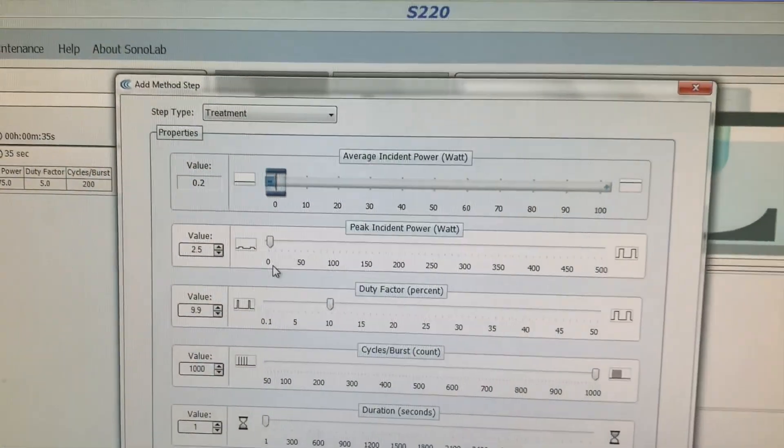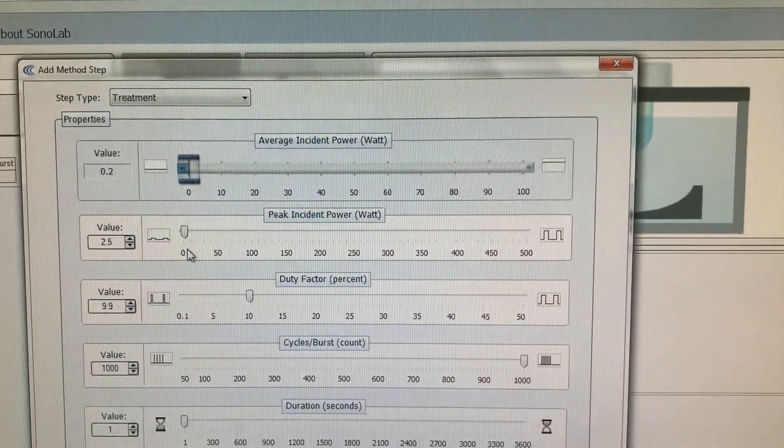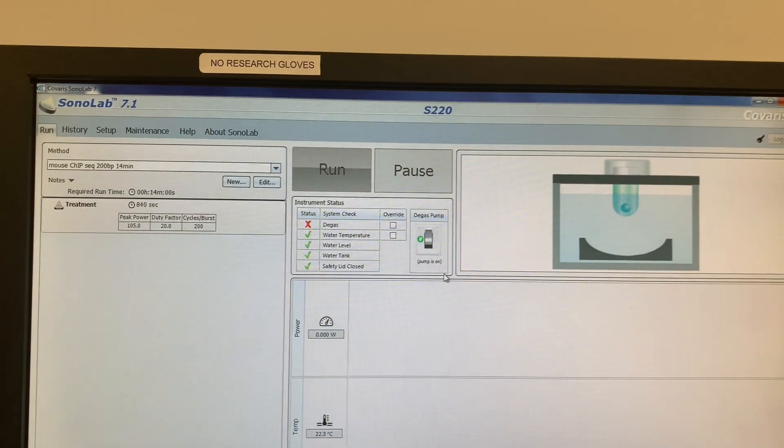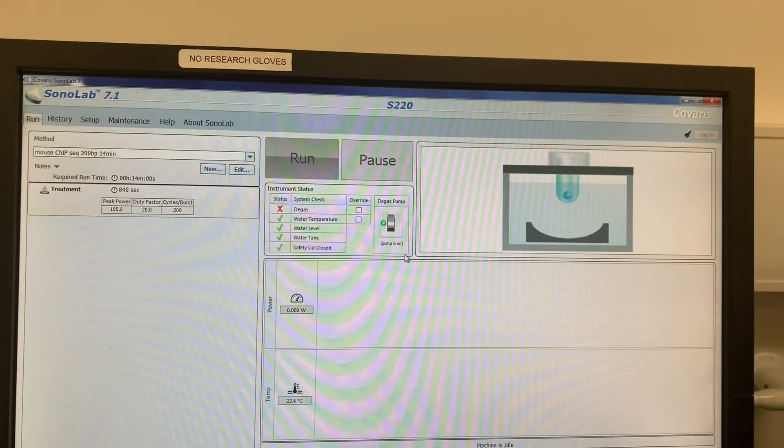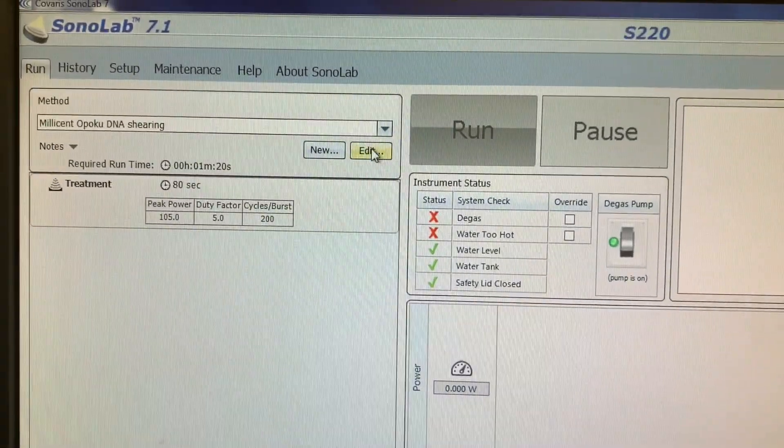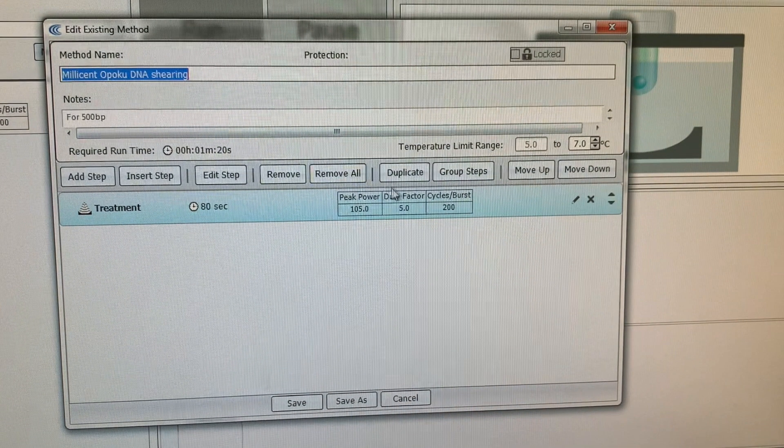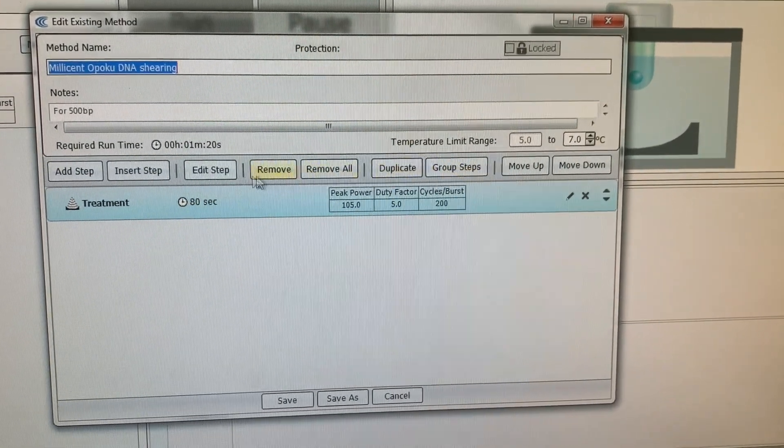The software allows you to input what you need it to do, what you want the instrument to do. The quickest way to do it is to edit an existing program that the software gives you so that you can go ahead and customize it for your particular fragmenting.